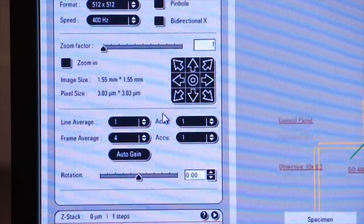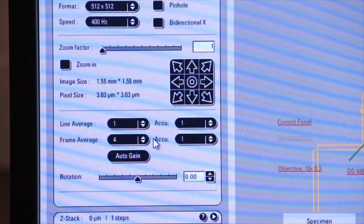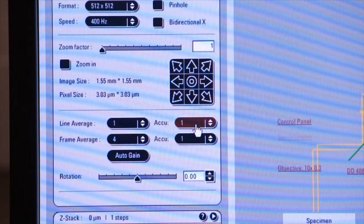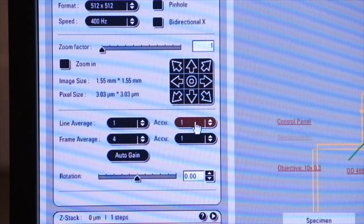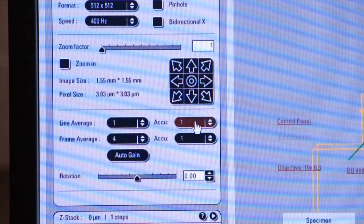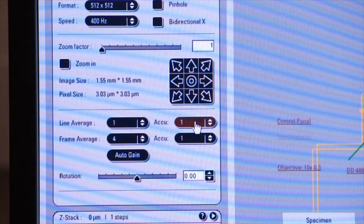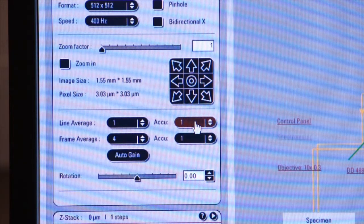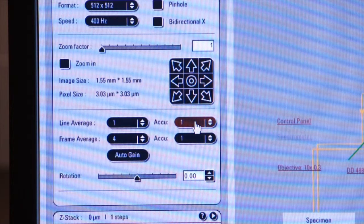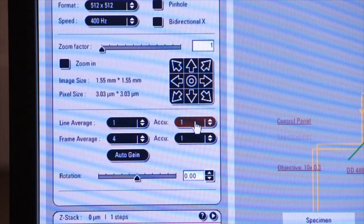Another feature that's useful on the left screen next to line and frame average is the accumulate tab. Accumulate takes an accumulation of each scan. If you have a low signal image and you want to boost the brightness of that image.